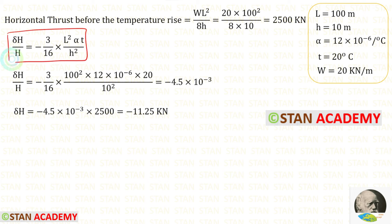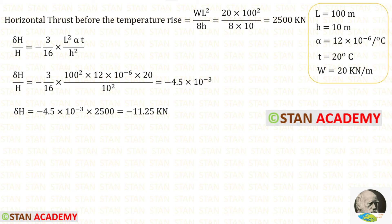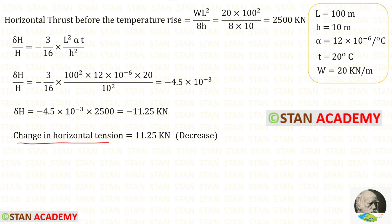Now using this expression, we can find sigma h. From the given data, we can apply L, alpha, T, and h. For sigma h upon h, we will get this value. Then we can take h on the other side. We know that h is 2500. Finally, for sigma h, we will get minus 11.25 kilo Newton. So the change in horizontal tension is 11.25 kilo Newton. Since we have got a negative value, the horizontal tension will decrease. This is the answer for the first question.